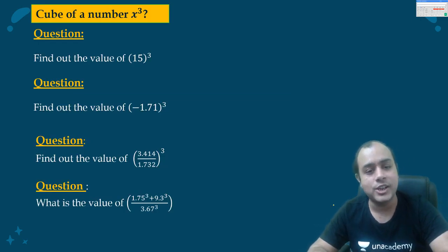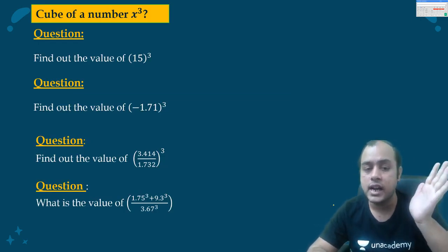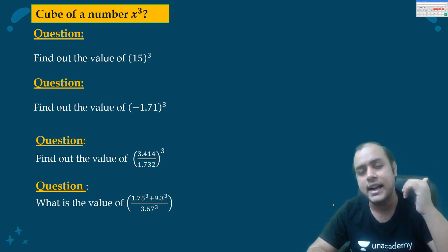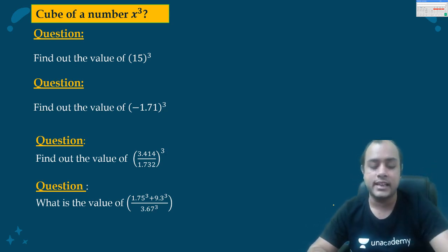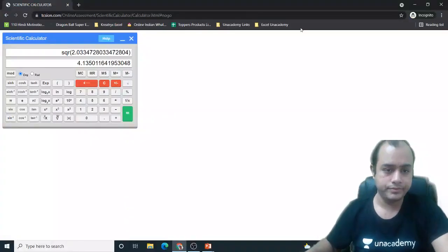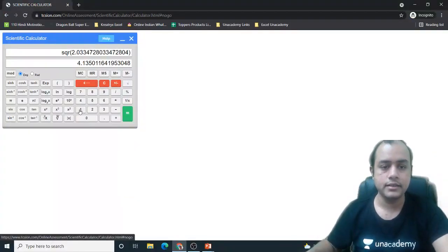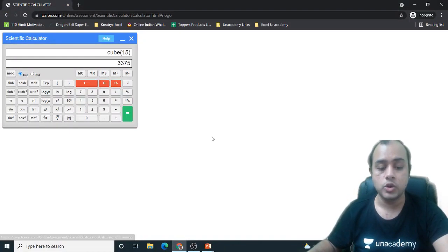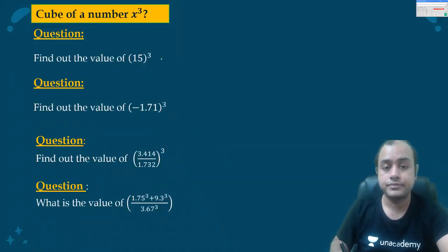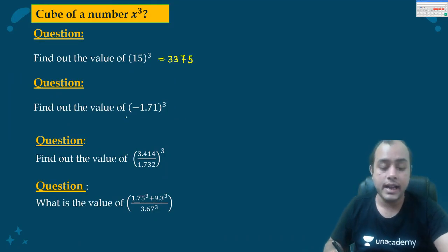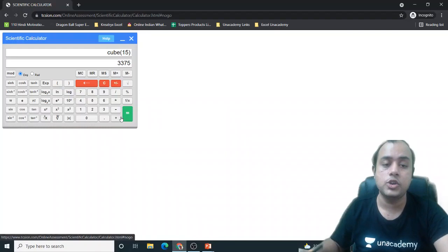Next, let us go after cubes. Similar process we are going to follow in the cubes, but this time the examples that I will take, I will increase the complexity a little bit. 15 cube. First thing, let us clear it. 15, then I will click on cube, 3375. Very simple.